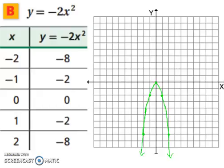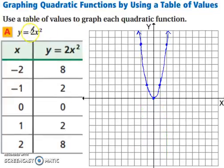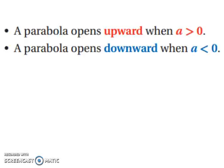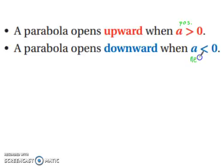Notice the difference between this quadratic function and the previous one: one is positive and one is negative. When a parabola opens upward, that's when a is greater than 0 — positive. A parabola opens downward when a is less than 0 — negative.